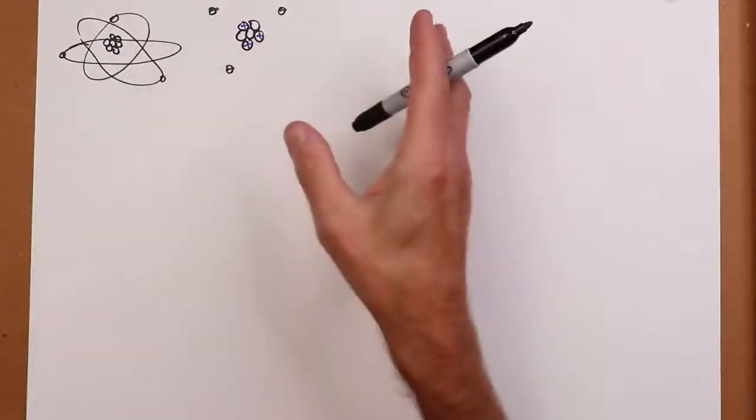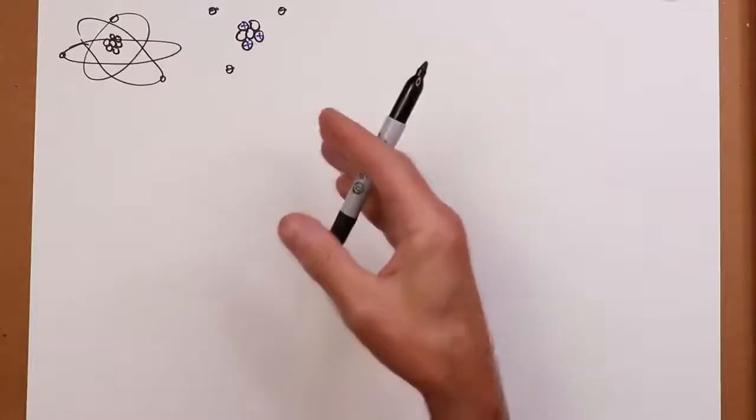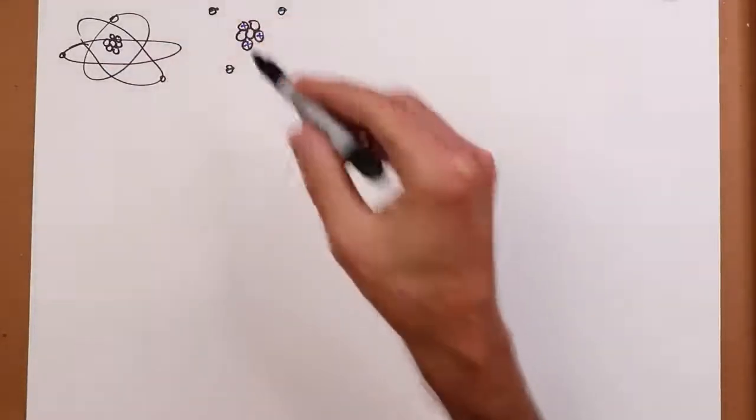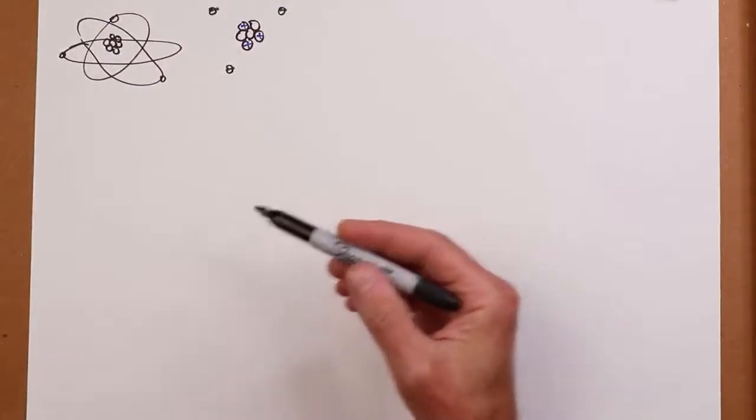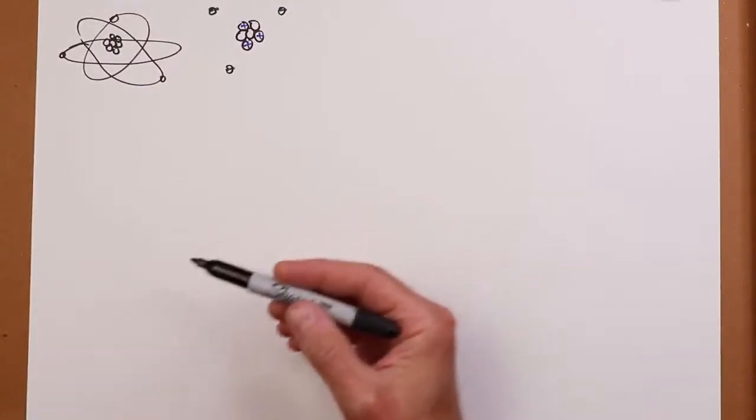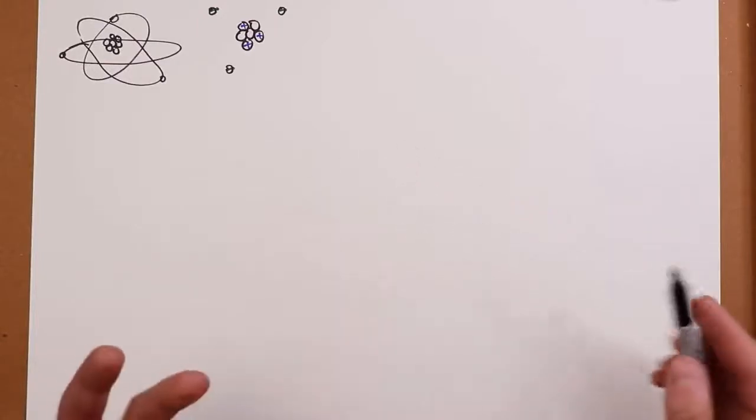The radius of a proton is around 10 to the minus 15 meters. Now, the nearest electron, zipping around here, is about 5 times 10 to the minus 11 meters. Well, that ratio is about 60,000 to 1.